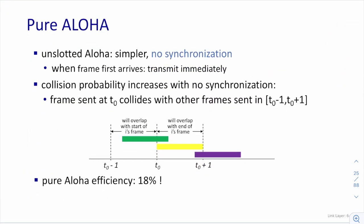The other variant is pure ALOHA — a simpler version with no synchronization. There is no concept of a slot in pure ALOHA: if you want to send a packet, you send it at any time. To analyze its performance, consider the yellow frame: for it to succeed, no other node's transmission should overlap with it.